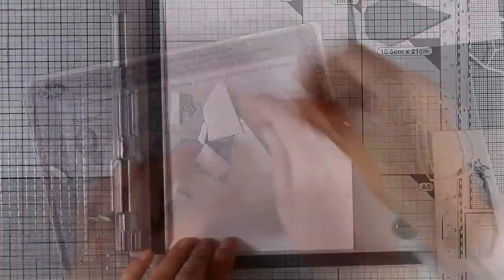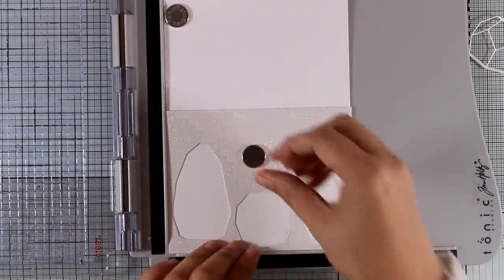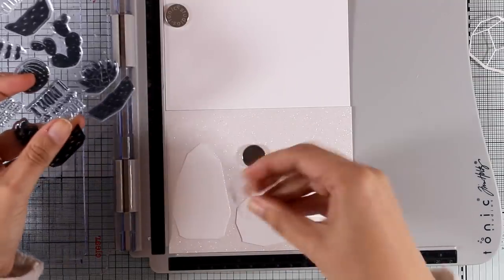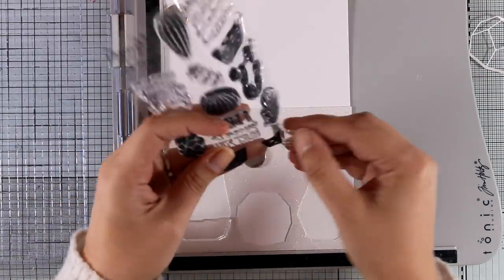Now it's time to do some stamping. I'm placing my panel on top of my card base so I know exactly where those windows are going to fall, and now I'm going to place those little pots.